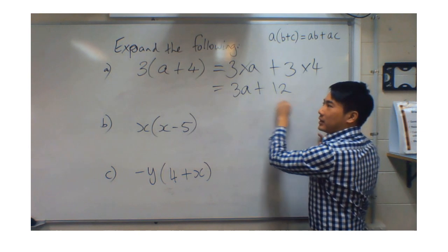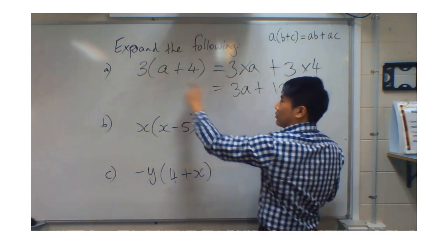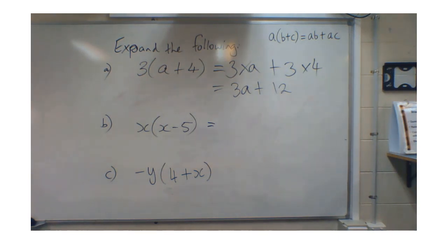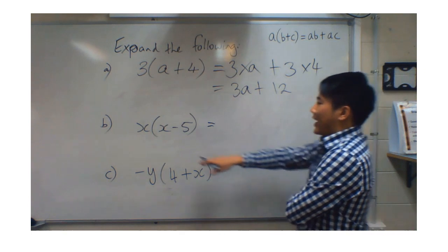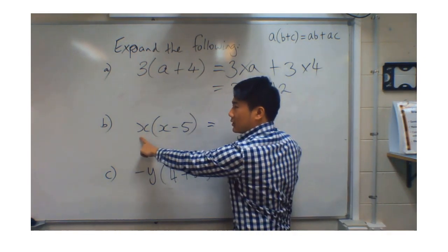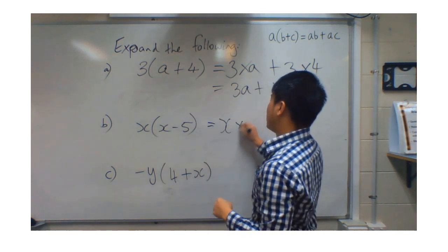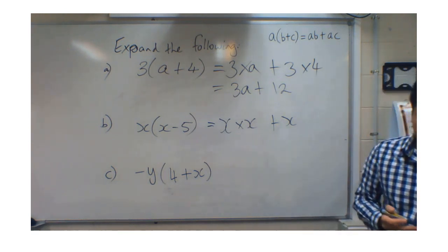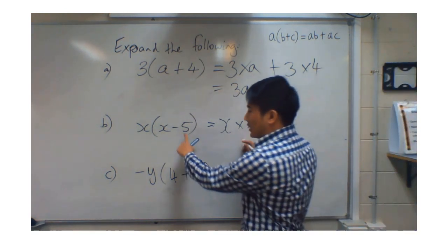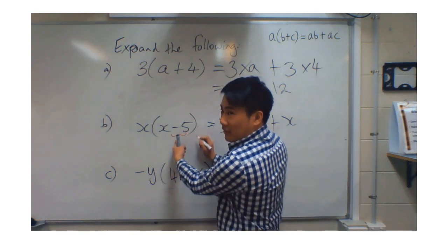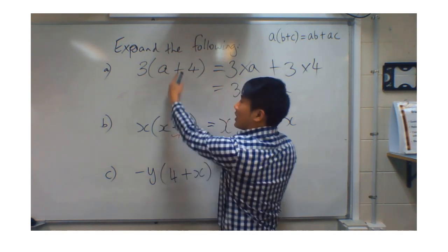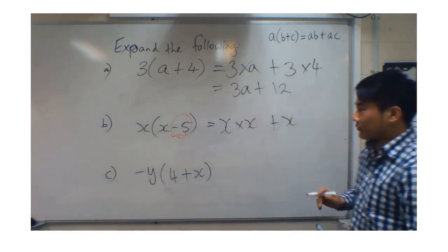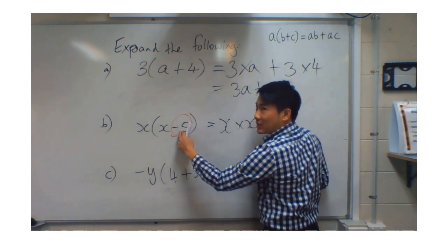Let's look at the second example. I've got x outside the bracket, and x minus 5 inside. Multiply x by the first term, which is x, giving x times x. Then add x multiplied by the second term. Be super careful here — the second term is not five, it's negative five. This negative sign is stuck to the five, just like the positive sign is stuck to the four in the previous example.